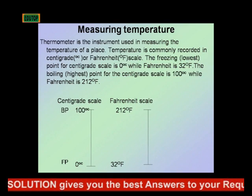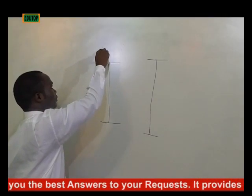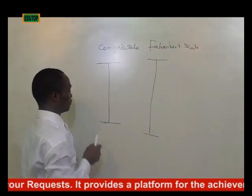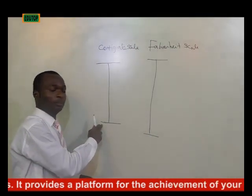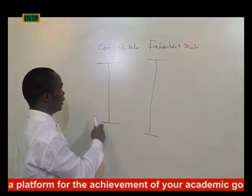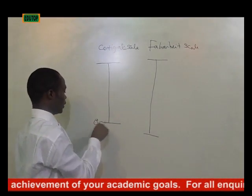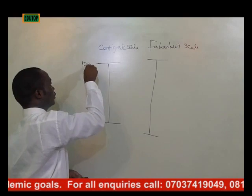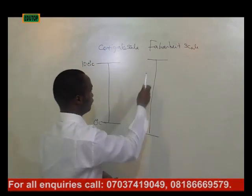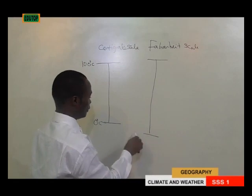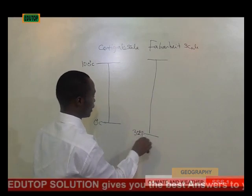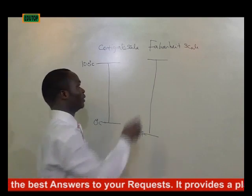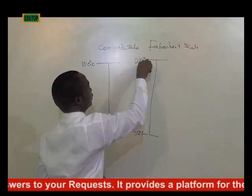Let's take this to be the centigrade scale, and this is the Fahrenheit scale. Here is the lowest point, which is the freezing point. For the centigrade scale it is 0 degrees Celsius, and the highest point is 100 degrees Celsius. For Fahrenheit we have 32 degrees Fahrenheit for the freezing point, and for the boiling point we have 212 degrees Fahrenheit.